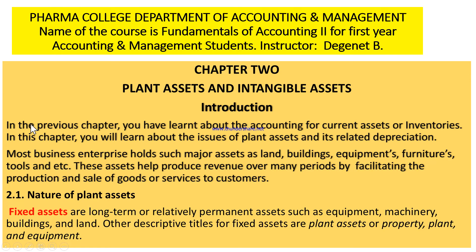In the introduction part: in the previous chapter, or chapter 1, you learned about accounting for current assets or inventories. In this chapter, you will learn and discuss the issues of plant assets and their related depreciation. Most business enterprises hold major assets such as land, buildings, equipment, furniture, and tools. Those assets help produce revenue over many periods by facilitating the production and sale of goods and services to customers.